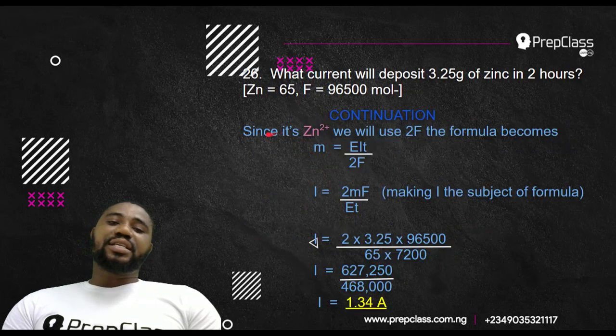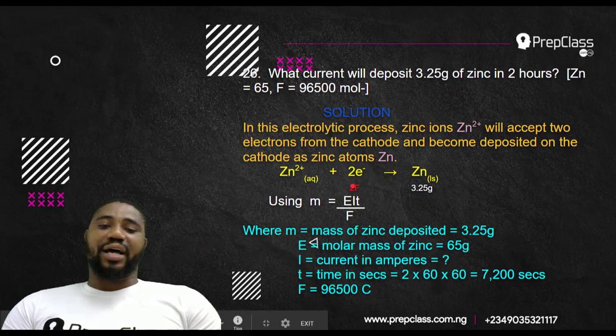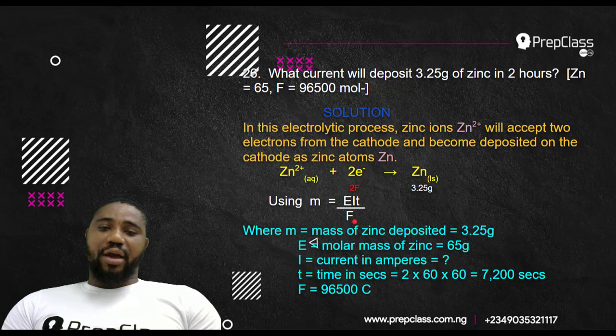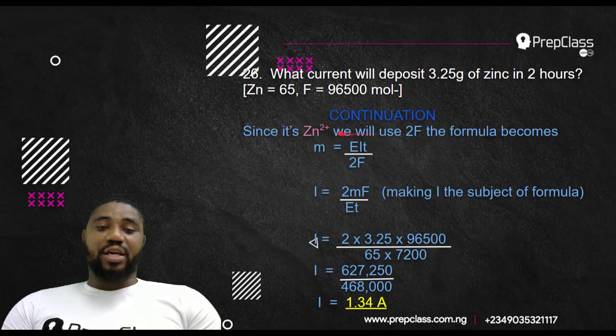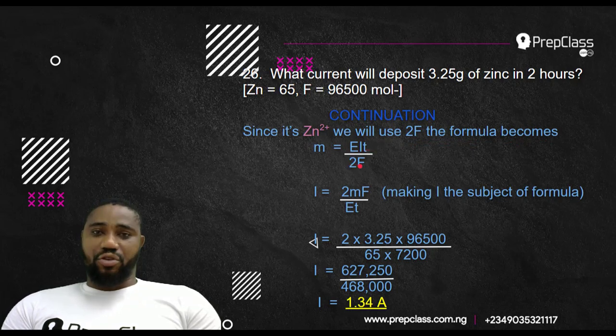But remember I said, since Zn2+ has two electrons being accepted, we'll be making use of 2 Faraday instead of 1F. So our formula now becomes M equals EIT all over 2F. If you make I the subject of formula, you have I becomes 2MF all over ET.